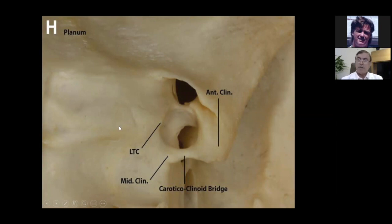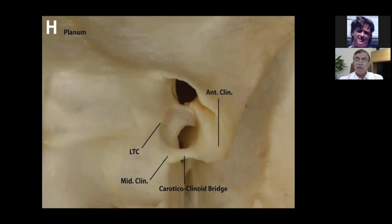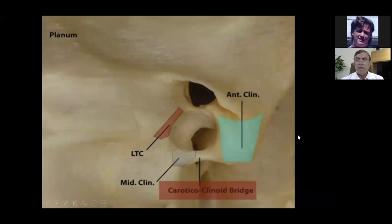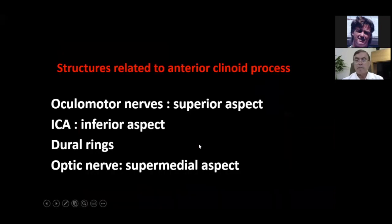Not only do we need to know the normal anatomy of the anterior clinoid, but we need to know the abnormal anatomy. This is reported to be present in about 10 to 15 percent of the population, circling the carotid — this middle clinoid process. So we need to know what structures are related to the anterior clinoid.